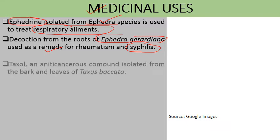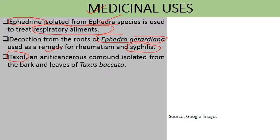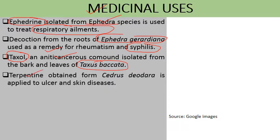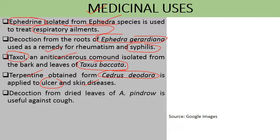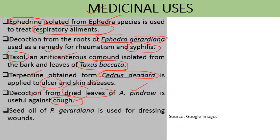We have one important chemical substance, taxol, obtained from Taxus baccata, which has anti-cancerous properties and is used for the treatment of cancer. Turpentines obtained from Cedrus deodara are used to treat ulcers and skin diseases. A decoction prepared from dried leaves of Abies pindro is used to treat cough. Seed oil of Pinus gerardiana is used for dressing wounds and injuries.